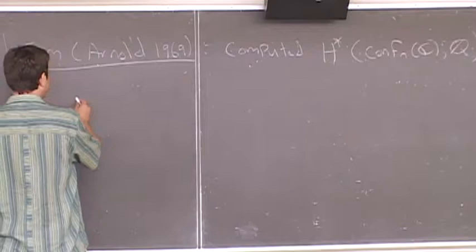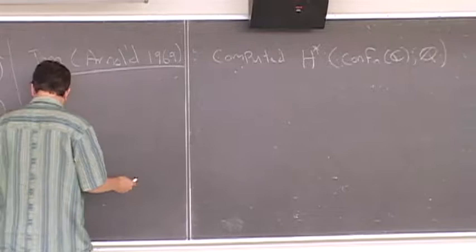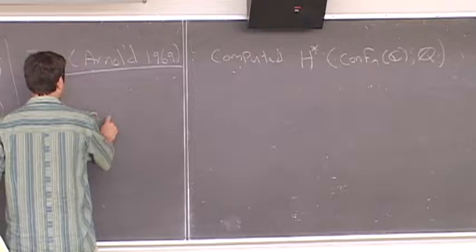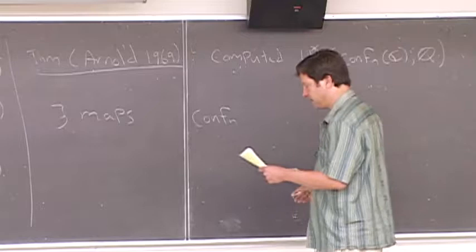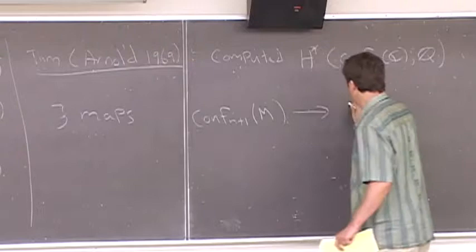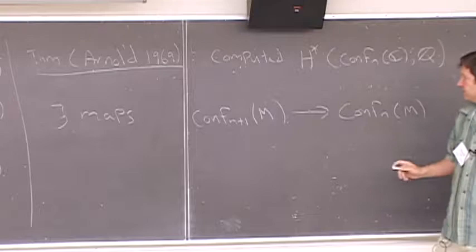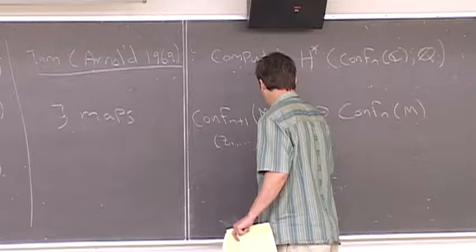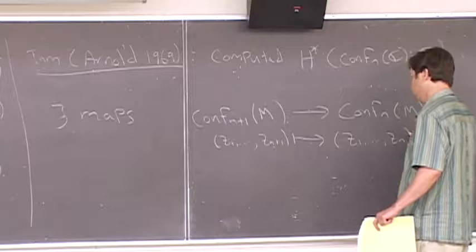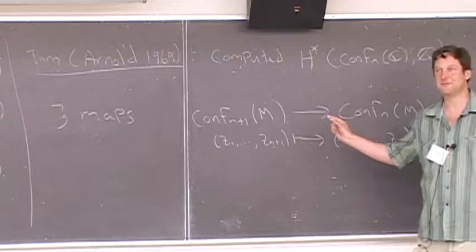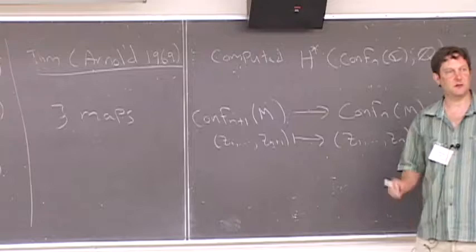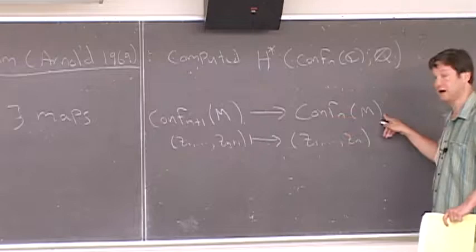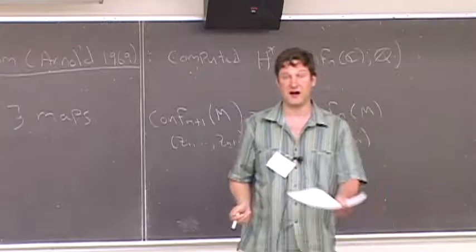There exist maps. There's a map from configurations of n+1 points on a manifold to configurations of n points: you take (z₁, …, z_{n+1}) and forget the last point. An important point: when you have unlabeled points, if you mod out by S_{n+1} here and S_n there, there's no such map. Given five unordered points on a sphere, there's no canonical way to pick which point to forget. Because of that, a lot more was known for the case where n is a compact manifold with boundary, like the plane, where you can add a point at infinity.